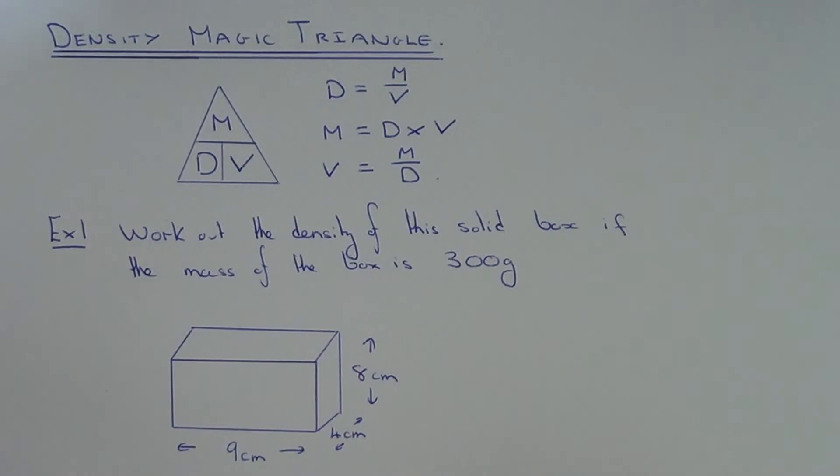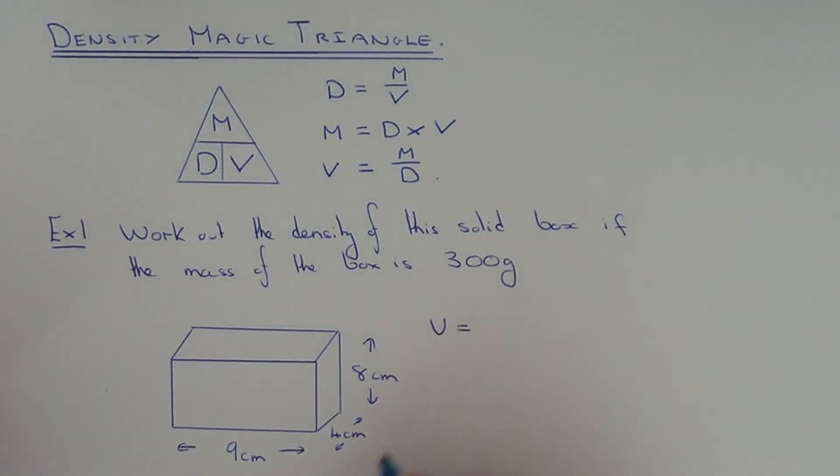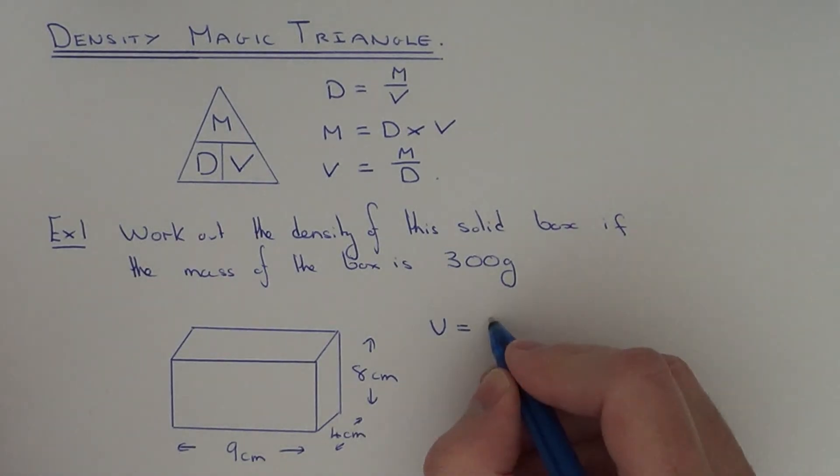The first thing we need to do is work out the volume of the box, because we need this if we're going to find the density. To work out the volume of a cuboid, it's really easy. You just need to multiply the three side lengths together.